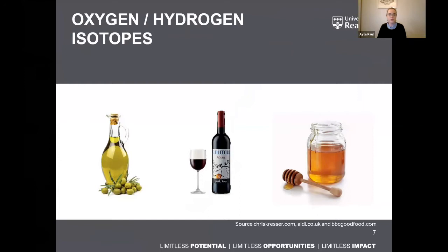There are numerous examples of studies where the isotopic ratios of foodstuffs show a significant relationship with the geographic origin of those samples, such as in olive oil, wines, and also in honey.